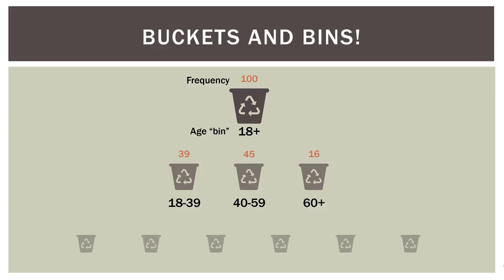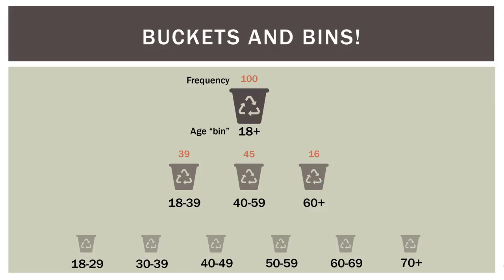We can continue further and split it up into six buckets: 18 to 29, 30 to 39, 40 to 49, et cetera, and put those people into buckets. So now we have 24 in the first one, 15, 23, 22, 15, and one. This gives us more resolution into the age distribution of our data. This is the fundamental concept in creating histograms — we put all of our quantitative data into buckets or bins that don't overlap, they butt up against each other, and then we put the number of observations in that range into that bucket. That gives us better resolution of our data and tells us a lot about the distribution.